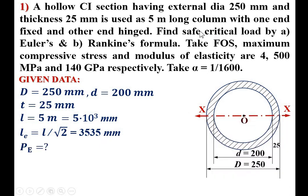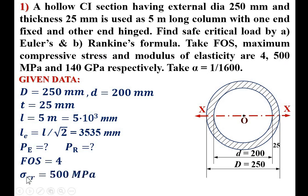Next, find the safe critical load by Euler's formula (P_E) and by Rankine's formula (P_R). Factor of safety FOS = 4. Maximum compressive stress σ_c = 500 MPa, and modulus of elasticity E = 140 GPa.